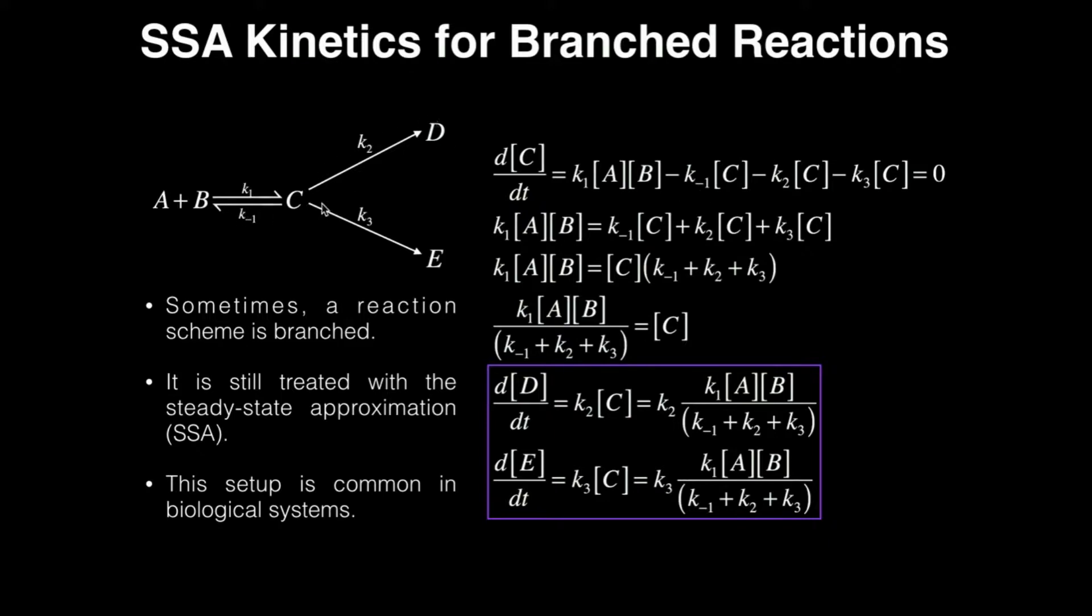We have two other reactants that are getting rid of C. That's K2 and K3. So those are both going to be negative, so we should have minus K2 times C and minus K3 times C, because C is the reactant with respect to both of those rate constants. And because we're using steady state approximation, our assumption is that the rate of change of this intermediate with respect to time is zero, so this entire expression is set equal to zero.